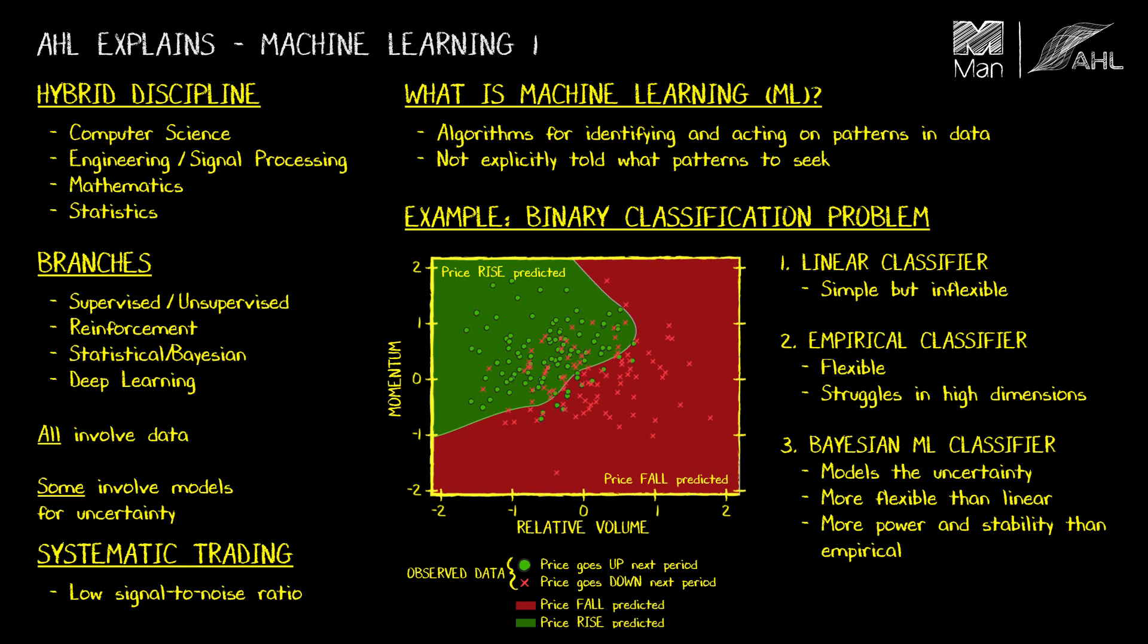To summarise what we've seen, modern machine learning tools offer an increased power and flexibility compared to traditional models and purely empirical approaches. Unfortunately, with these advantages comes an increased risk of overfitting. So it's more important than ever to understand the data, the problem and the algorithm you are using and to scrutinise the results very carefully. Thanks very much.